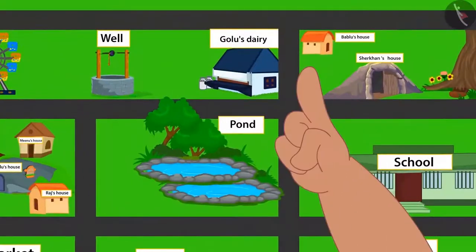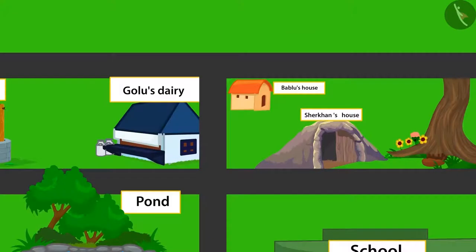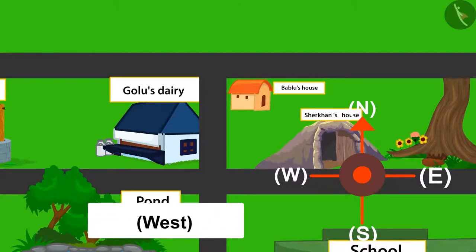So this is my house. And this is Golu's Dairy. If the direction towards the front of my home is North, and to left would be West direction. Golu's Dairy is towards the West from my home. So to go there, I will go towards West.